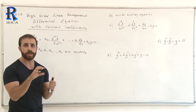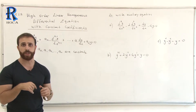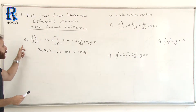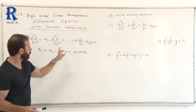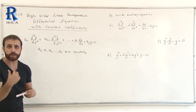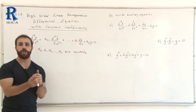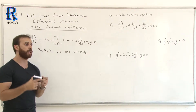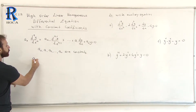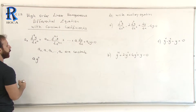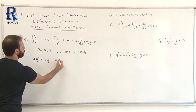Let's learn by using the smallest highest order, which is the second order differential equation. This is the nth order form, and all coefficients must be constant. To find the auxiliary equation, let's use the second order differential equation: a·y'' + b·y' + c·y = 0.